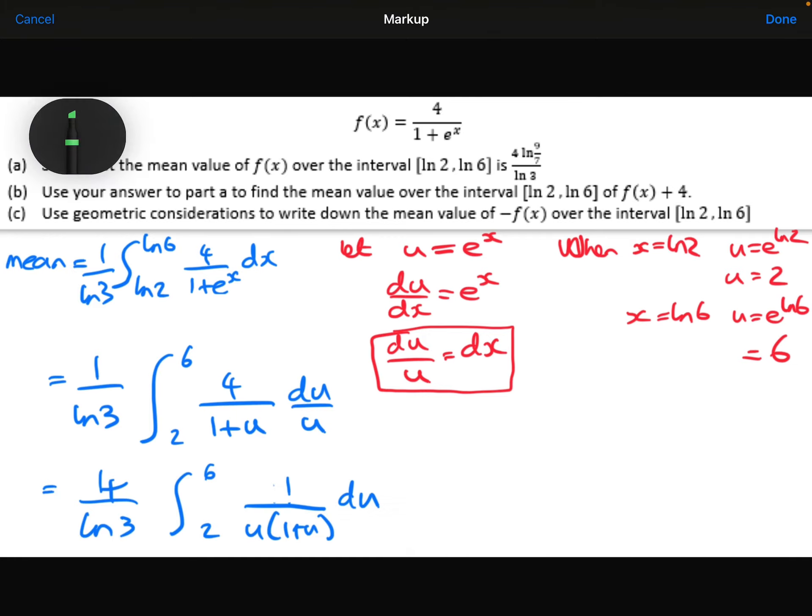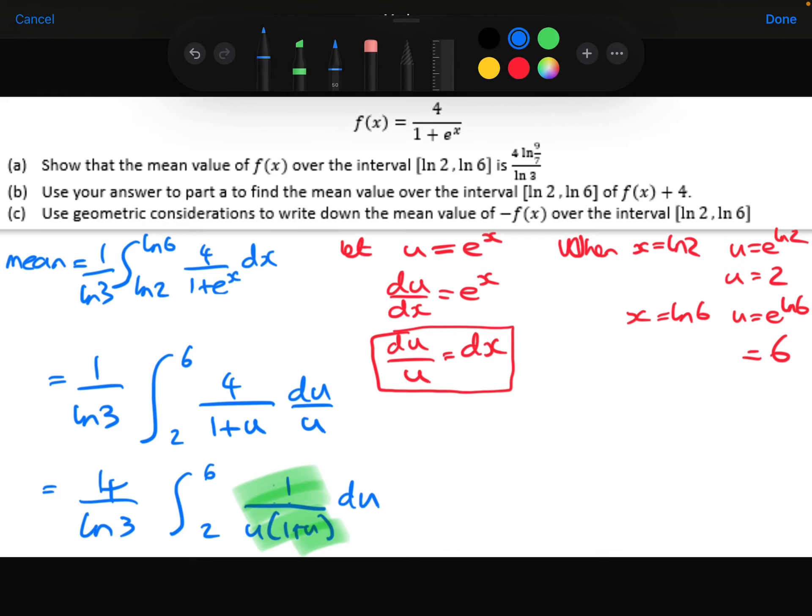So I would now do, and I'm not going to do all of this now, but I would rewrite this. Just a quick reminder. Rewrite that as a over u plus b over 1 plus u. And work it through. Doing your partial fractions technique. Like I say, I'm not going to go through that now. Basically, you end up finding that it's the same as 1 over u minus 1 over 1 plus u. So we're going to do that integral instead.